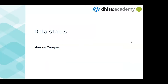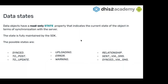Data states is a pretty important topic because if we understand what is behind the data states and how the SDK handles those states, we can start understanding how the SDK works and how the workflow really works with the SDK. The data states are a property of the data object — a read-only state — so the SDK will fully maintain this property. There are a bunch of these states and we use them for synchronization.